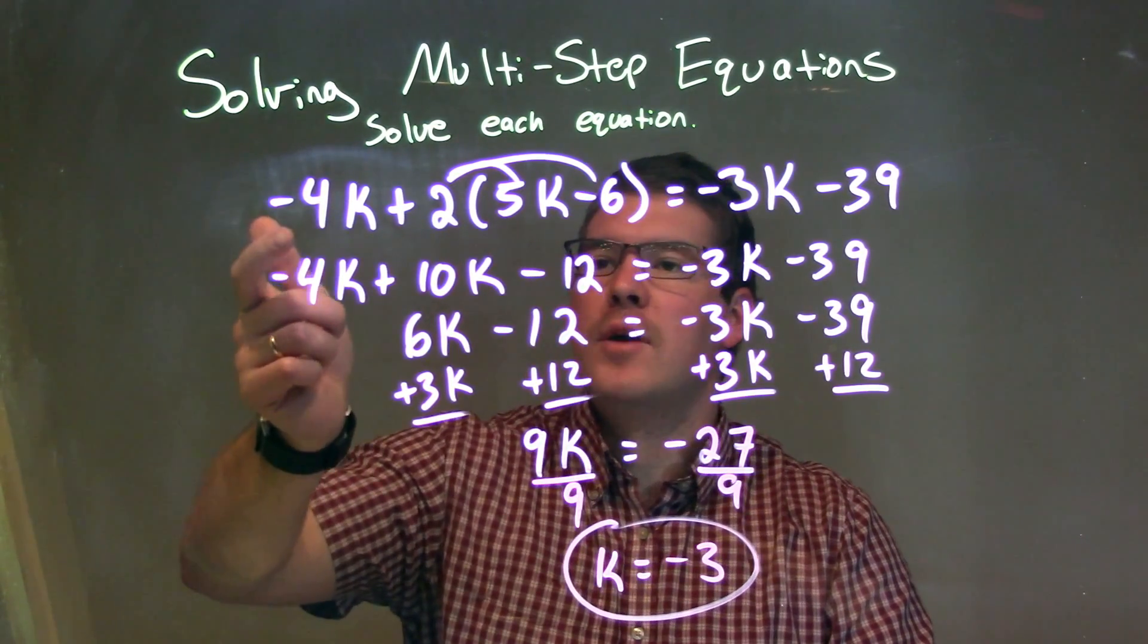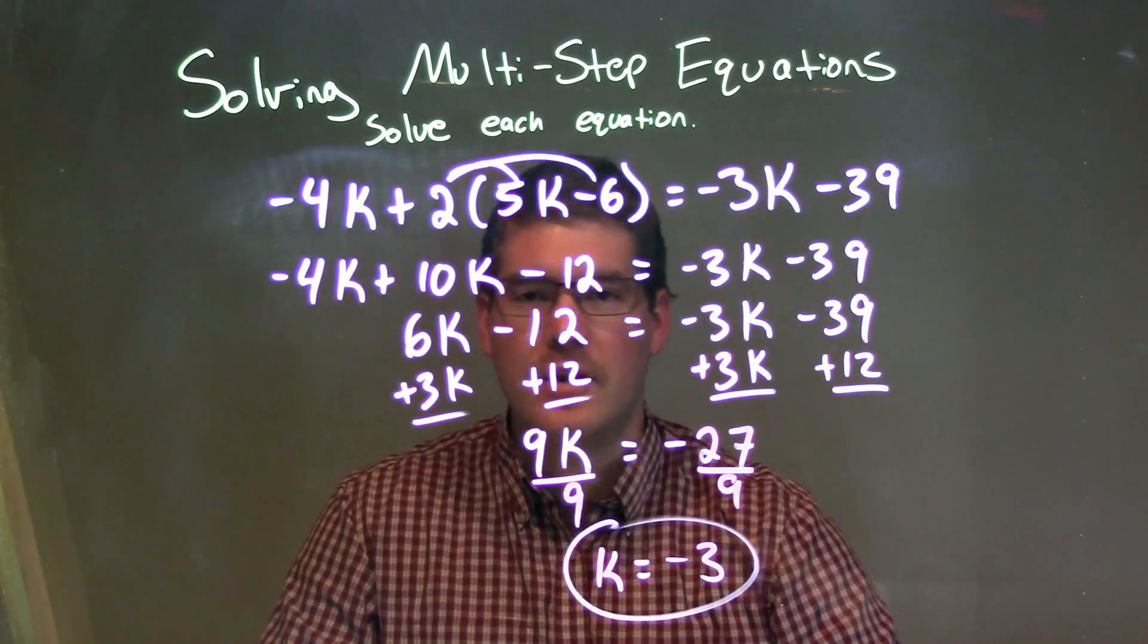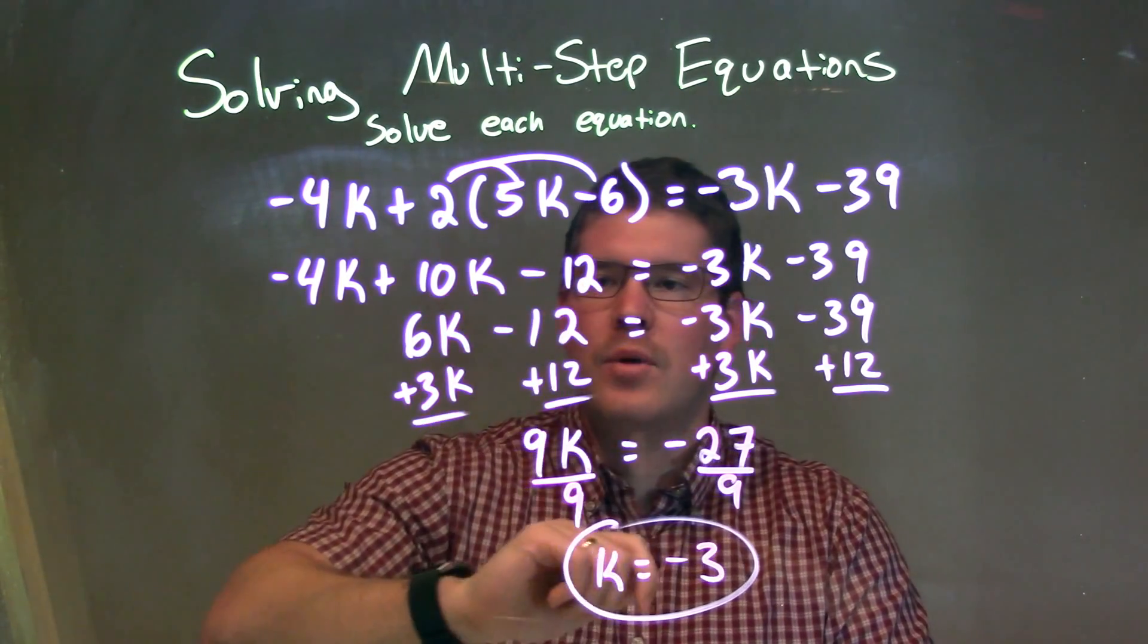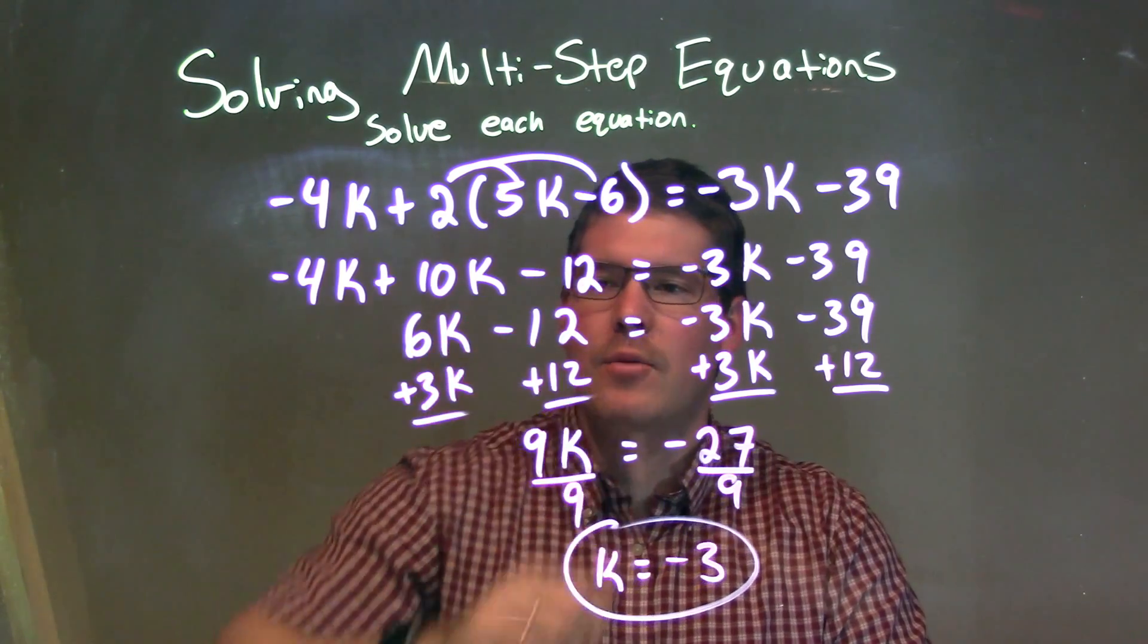So, let's recap. We started with negative 4k plus 2 times 5k minus 6 equals negative 3k minus 39. I distributed the 2 to both parts of the parentheses to get 10k minus 12. I then combined my like terms on each side and negative 4k plus 10k equals a positive 6k.